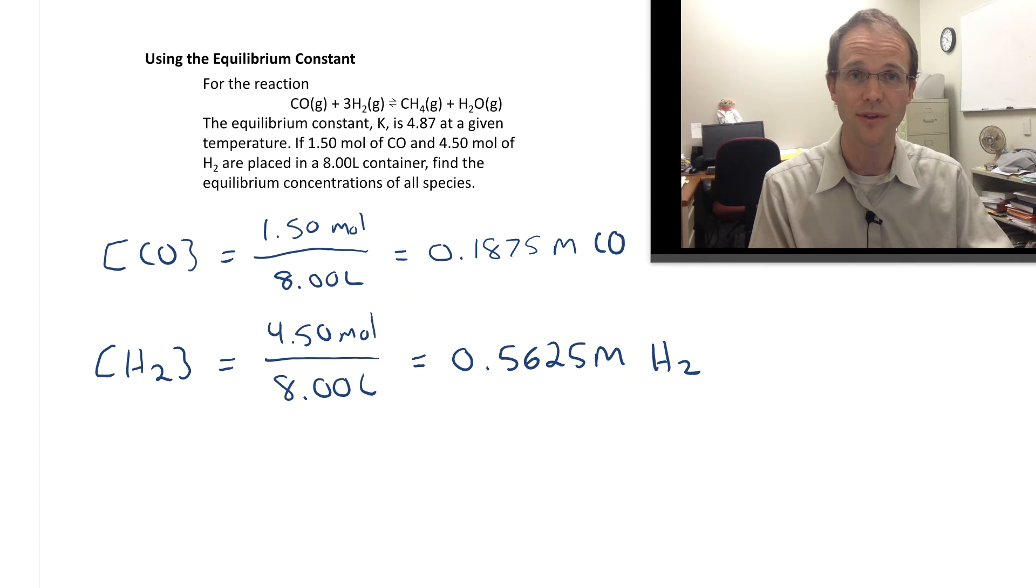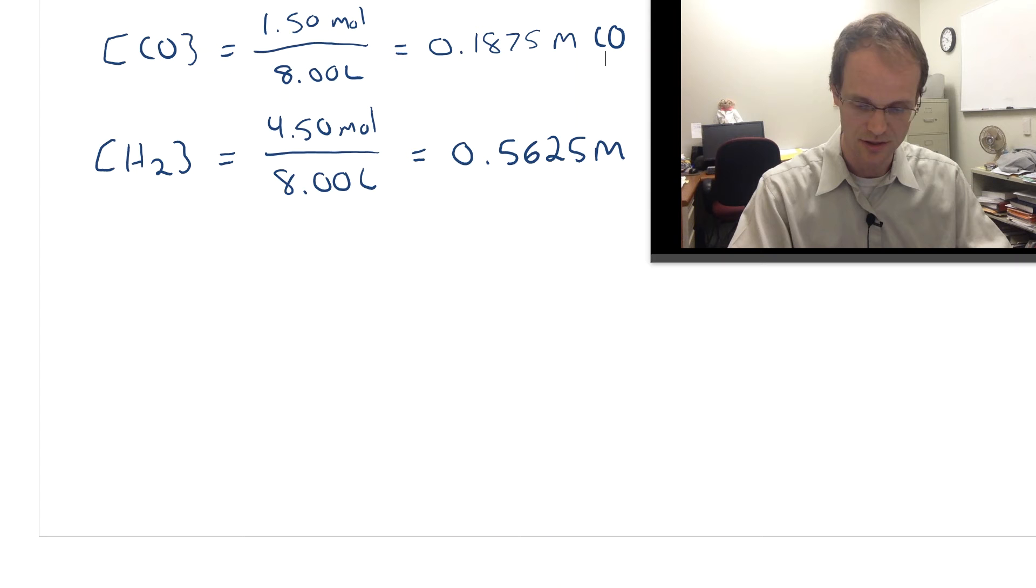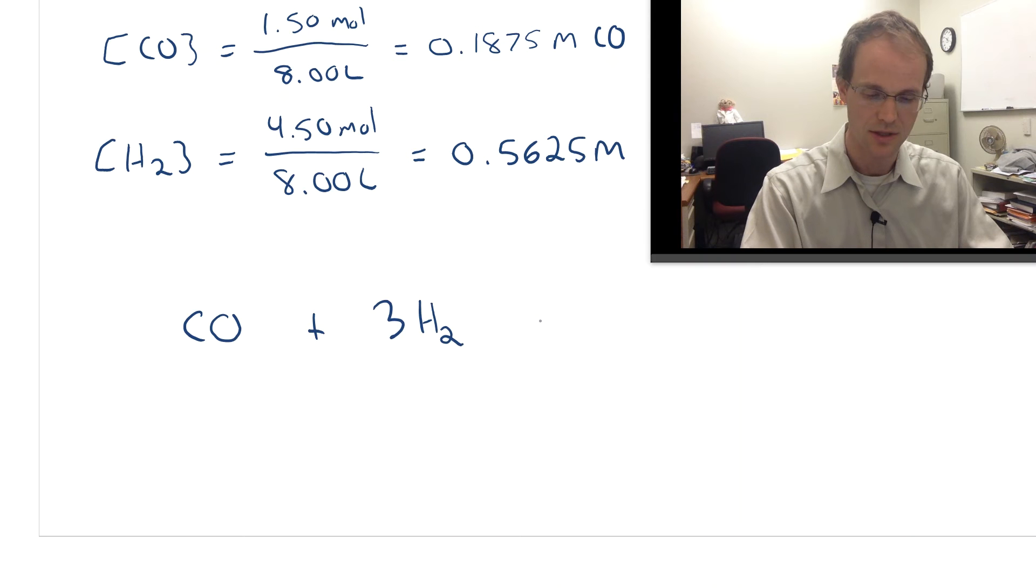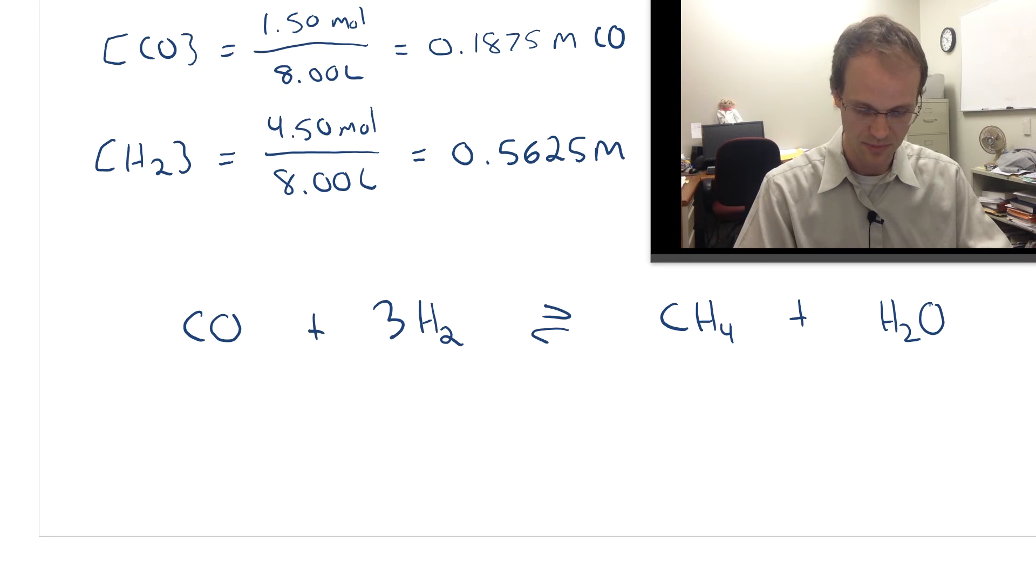When we have initial concentrations and a value of the equilibrium constant, we're going to put together an ICE table. Remember that stands for Initial, Change, and Equilibrium. So I'm going to scroll this up a little bit and write my reaction. My reaction is CO reacting with 3H2 to make CH4, methane, and H2O. When I'm writing the ICE table I don't worry about phases, because the important part is our initial, change, and equilibrium concentrations.